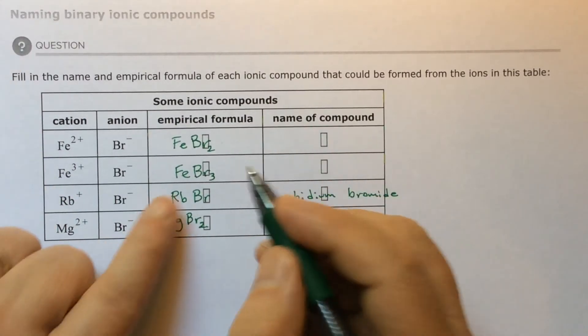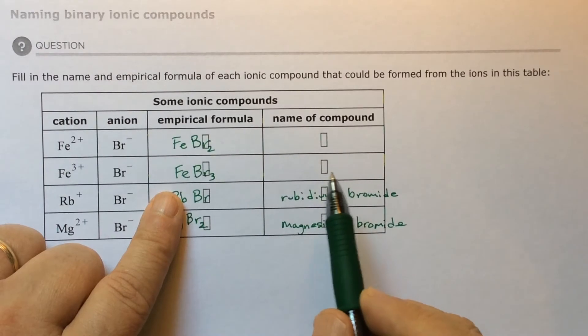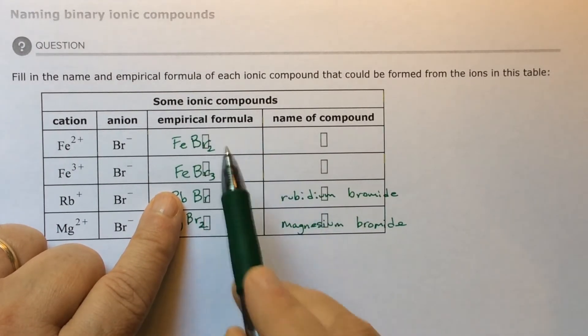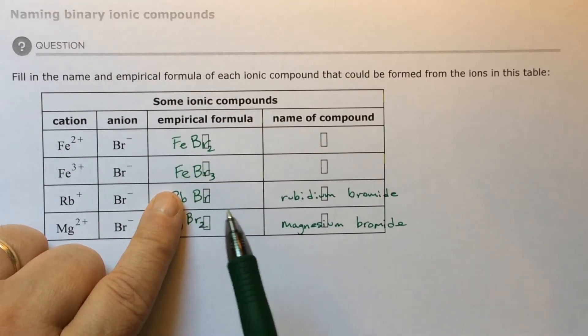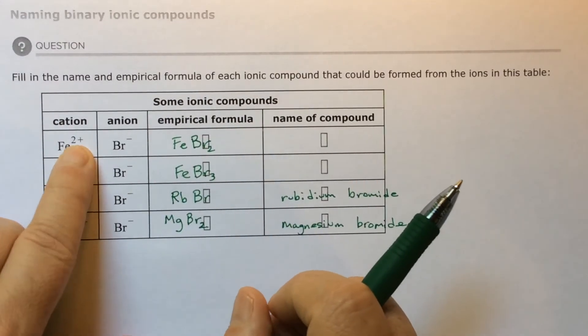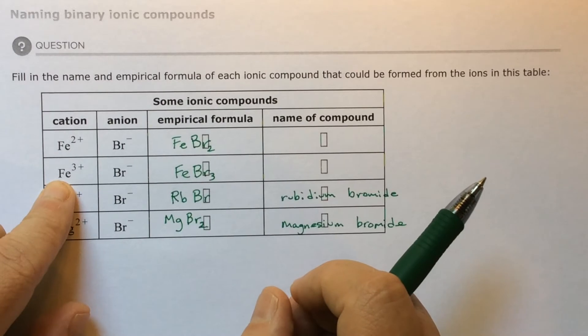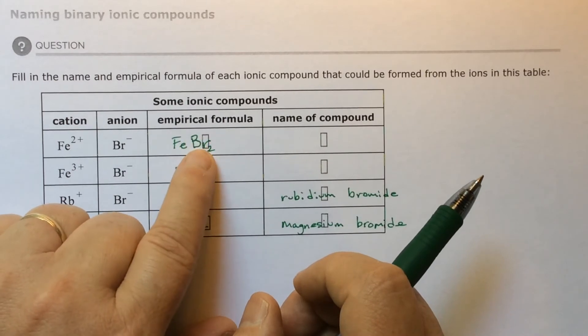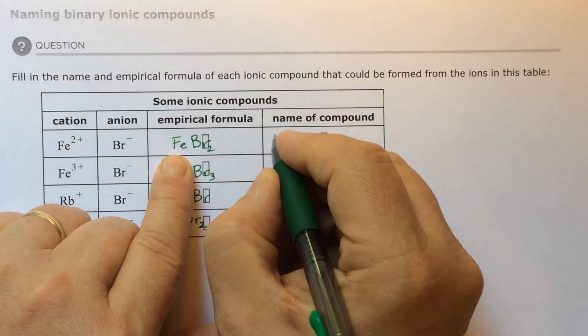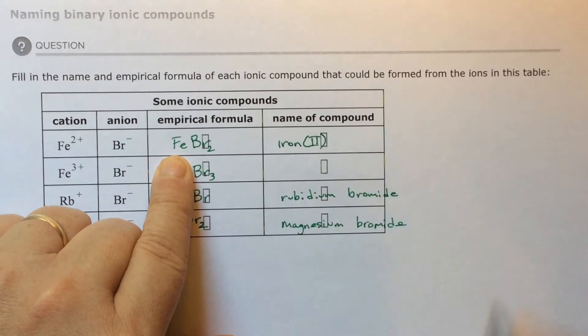Now we have to name. You can't just call this iron bromide because this would also be iron bromide. You can't have one name representing two different things. This has to be a different name than this. Smart people simply said, let's make it as easy as possible. If this is iron with a two plus, let's call it iron two. If this is iron with a three plus, let's call it iron three.